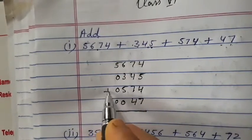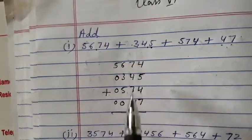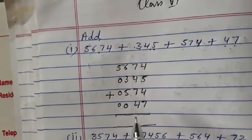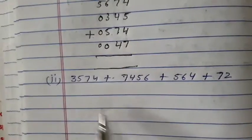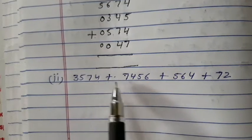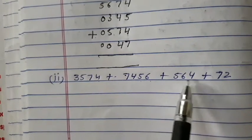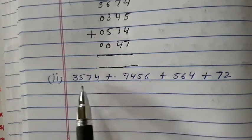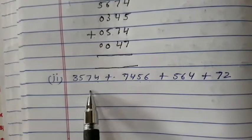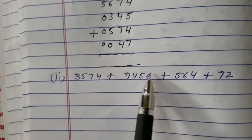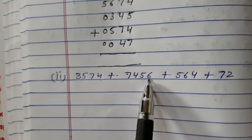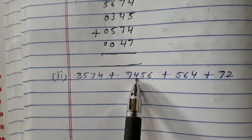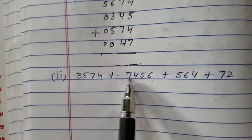Now I will add. I will write this term as it is: 3574 plus 74156 plus 564 plus 72. Now I will write what you have to write. First term as it is, 3574. Then write the second term from the unit place — at the unit place, then the 10th place, then the 100th place, and this number on the 1000th place.